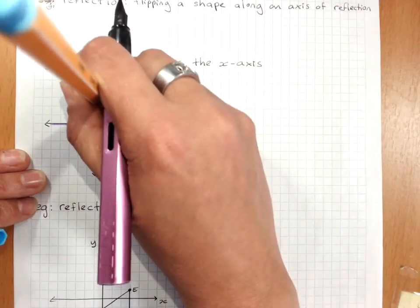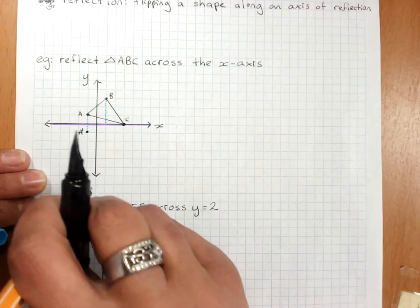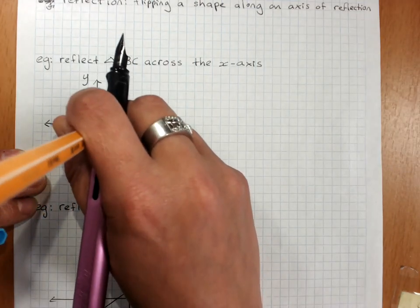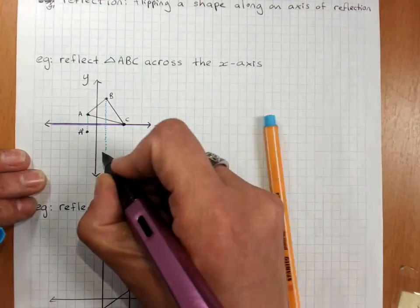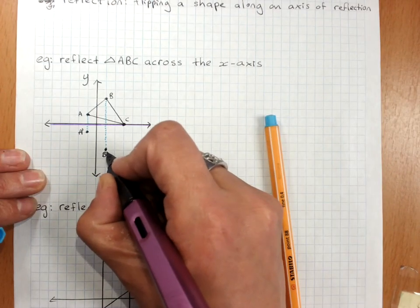Take our point B directly to the mirror, and exactly the same distance out the other side, and that's our new point B.